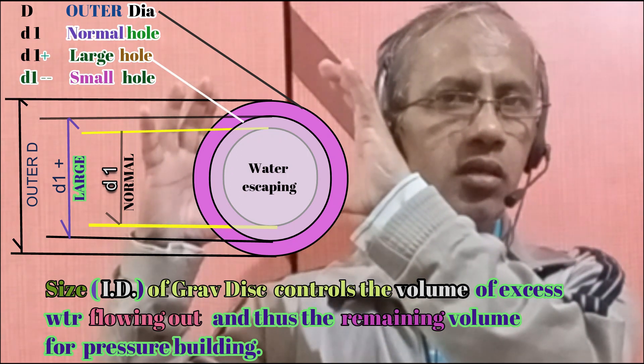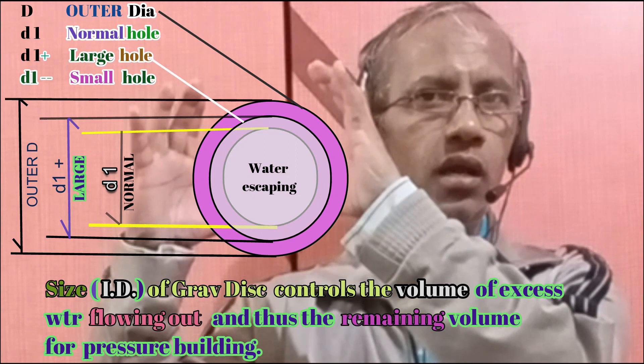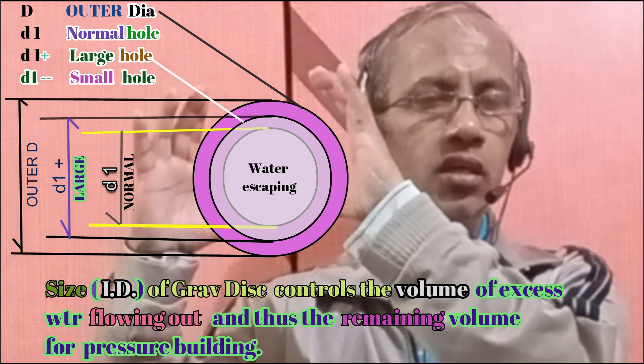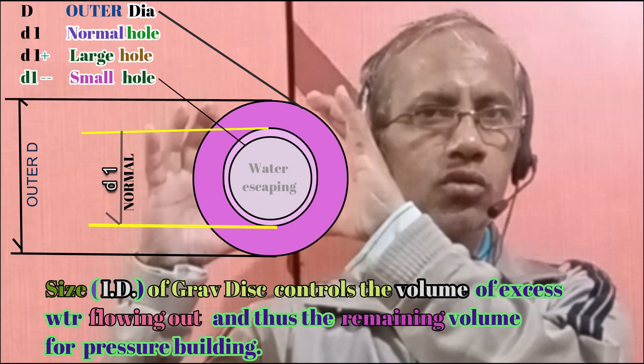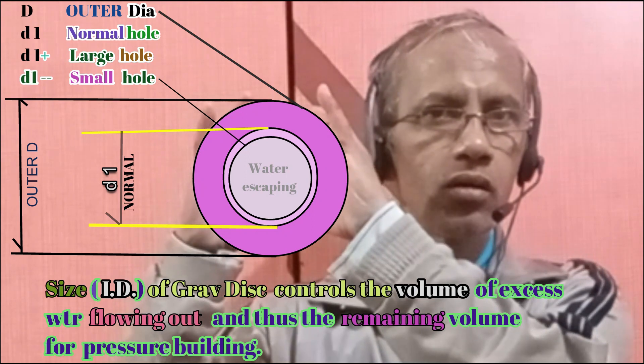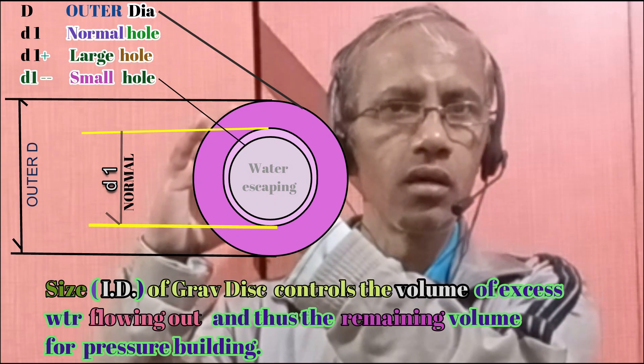Larger the diameter of this gravity disk, lesser the mass of the water left. And due to this lesser mass, the force generated will be less and the pressure will be less. If I reduce this escaping area, we can ensure that a higher amount of water will be left inside, and thus the pressure will be increased. That means, once we reduce the size of the gravity disk, we can increase the pressure. So the relationship between the size of the gravity disk and the pressure is opposite.